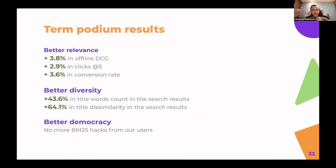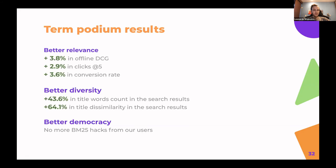Our results: a 3.8% increase in DCG, plus increases in A/B test clicks at 5 and conversion rate. We saw a 43% increase in title word count and 64% increase in title dissimilarity. The democracy problem is largely resolved — users can write any minimally relevant title and appear in search results without needing to repeat terms hundreds of times or use a very short title to rank well.